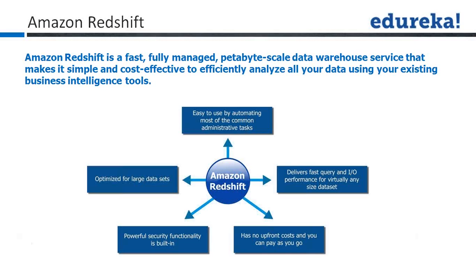The difference between a column database and a row-level database becomes clear when you observe fact and dimension tables as part of your database model. In your existing Oracle database, you create fact and dimension tables, with dimensions representing the various possibilities in your data model.